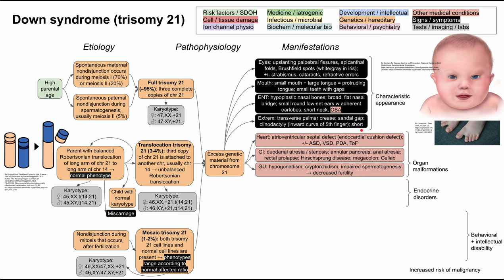The next category is organ malformations. The heart is significantly affected: patients can have atrioventricular septal defects (also called endocardial cushion defects), atrial septal defects, ventricular septal defects, patent ductus arteriosus, and tetralogy of Fallot. The GI tract is also affected — patients can have duodenal atresia, duodenal stenosis, annular pancreas, anal atresia, and rectal prolapse. Anal atresia can lead to megacolon, and they can also have Hirschsprung's disease, which can also lead to megacolon. These patients are also predisposed to celiac disease.